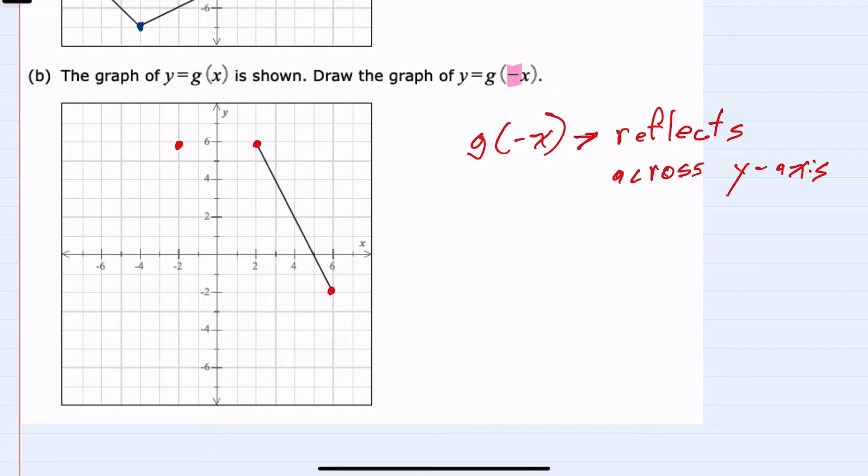The same thing here. This is 6, negative 2. This would become negative 6, negative 2.